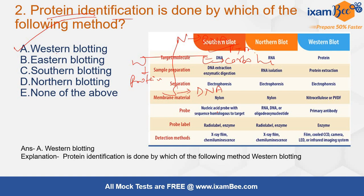Looking at the chart: southern blotting is used for DNA, northern for RNA, western for protein. You should also remember the membrane material — for southern blotting it is nylon, for northern blotting it is again nylon, and for western blotting it is nitrocellulose or PVDF. This question was also asked in the FCI AGM technical paper.